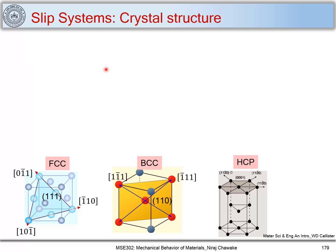Till now we have looked at dislocation in general. Now onwards we will be looking at dislocations with respect to crystal structures, especially dislocations in FCC crystal structures. I have shown common crystal structures like FCC, BCC, and HCP. In FCC, there are atoms at the lattice points at corners and on the face centers. In BCC you have atoms at corners and at the body center. In HCP the atoms are arranged in a hexagonal way where you have a B layer in between two A layers.